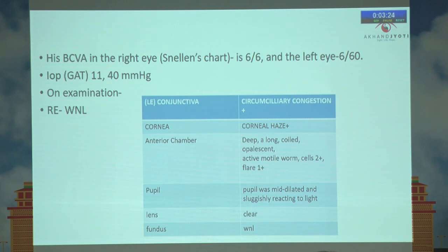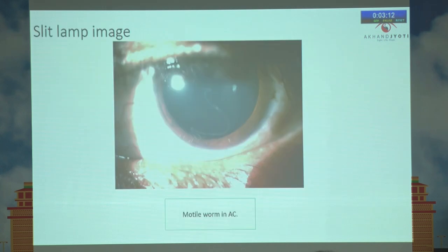The cornea showed haze, and in the anterior chamber, a long, coiled, opalescent, active motile worm was present. The pupil was mid-dilated and sluggishly reacting to light.